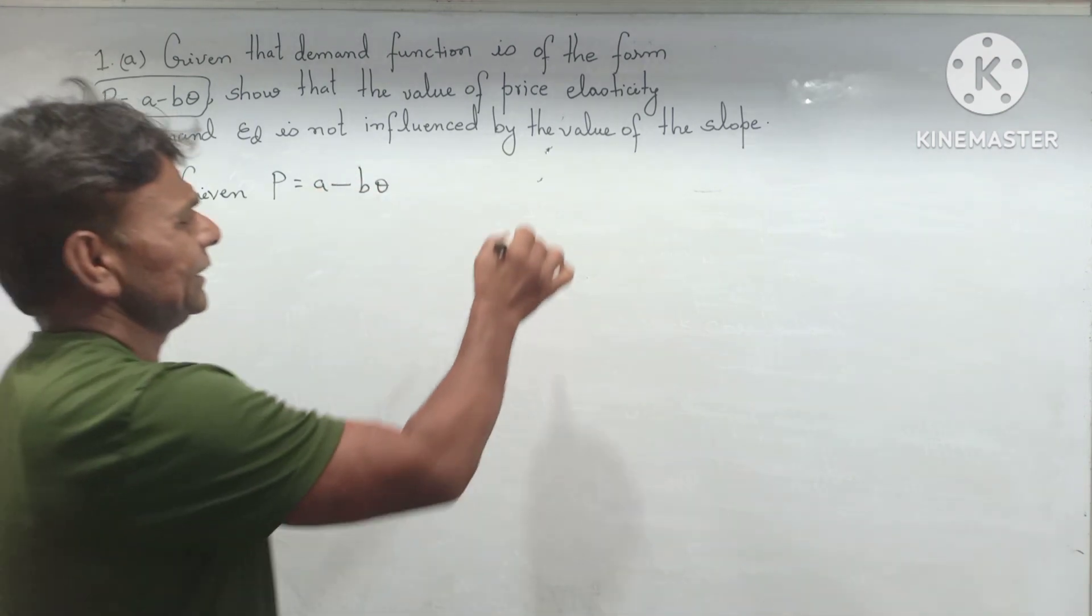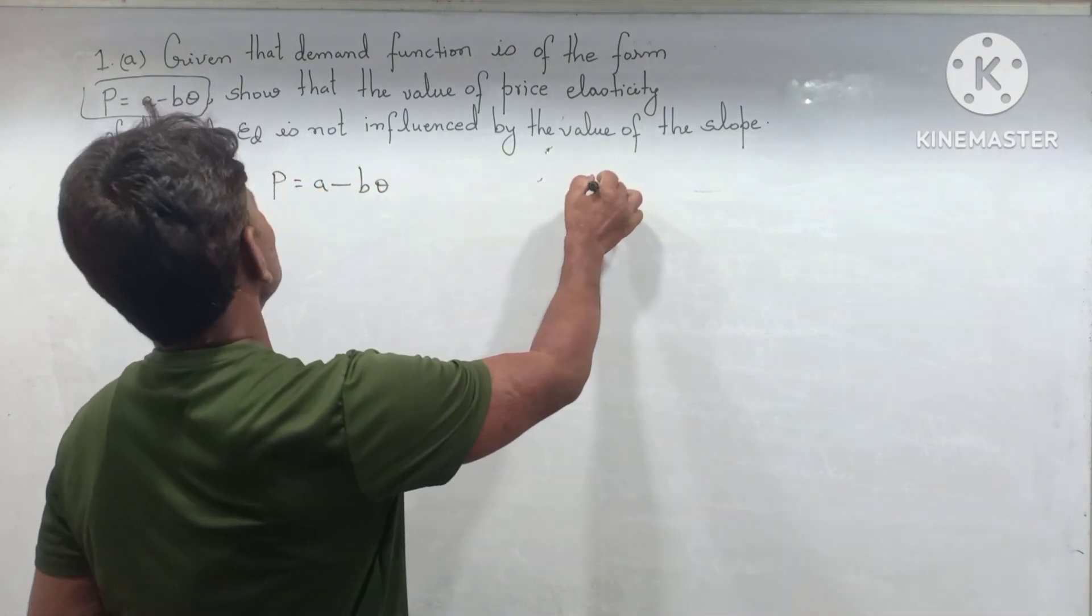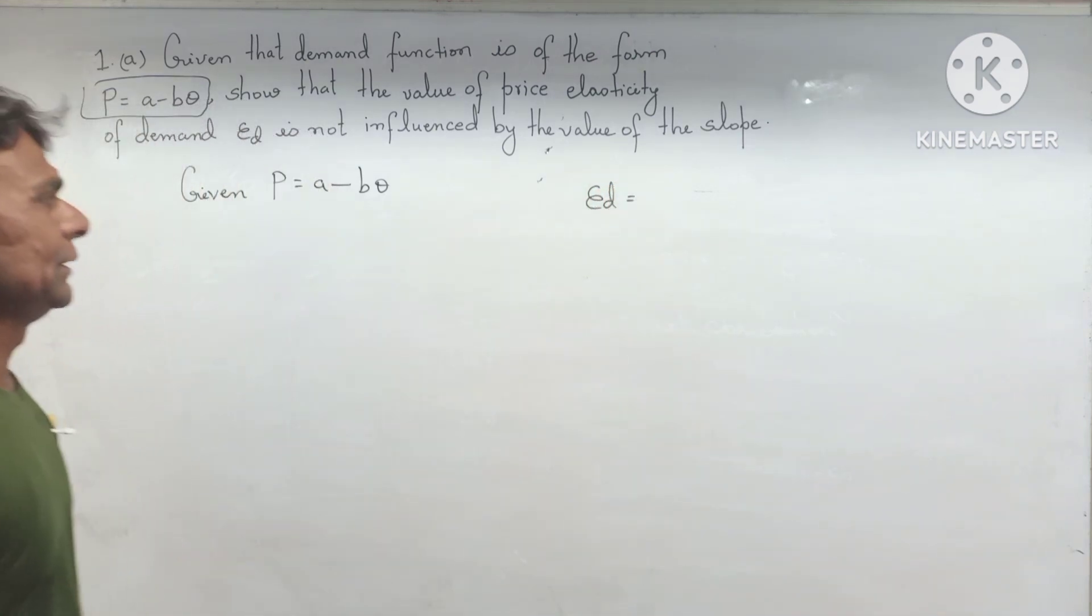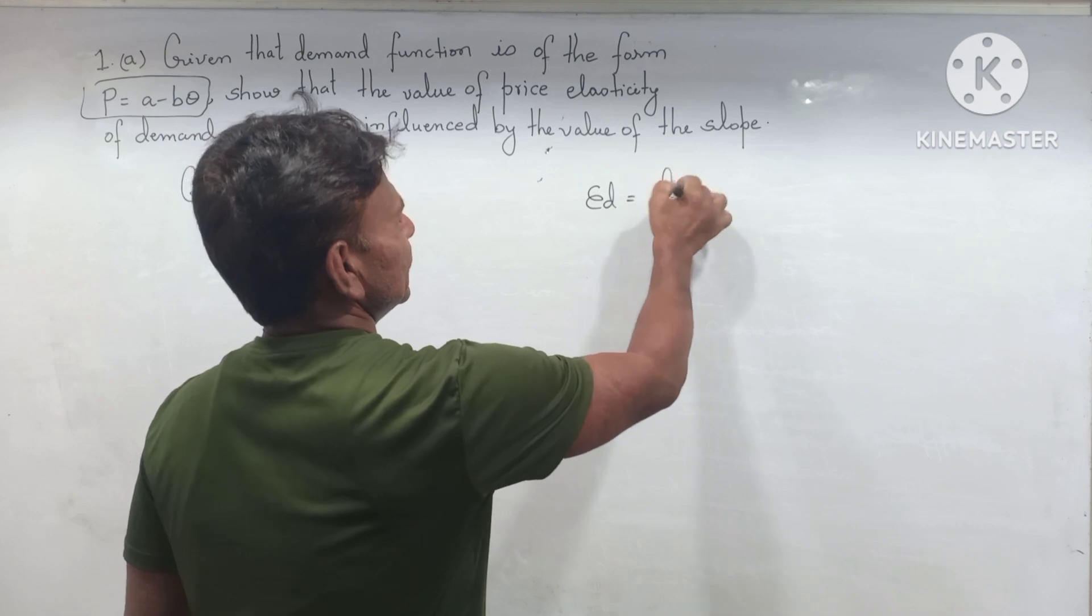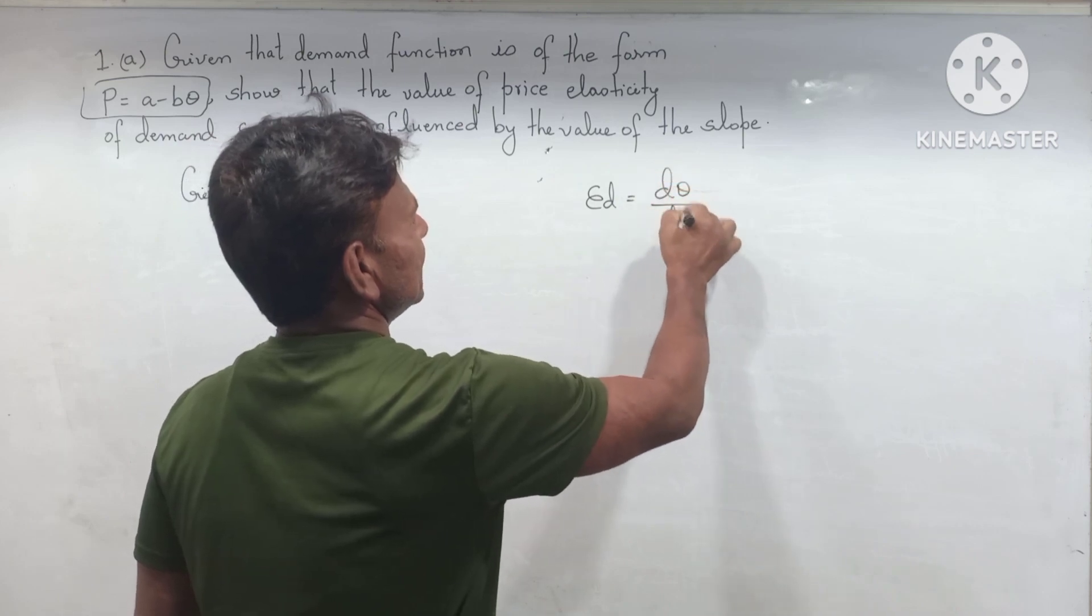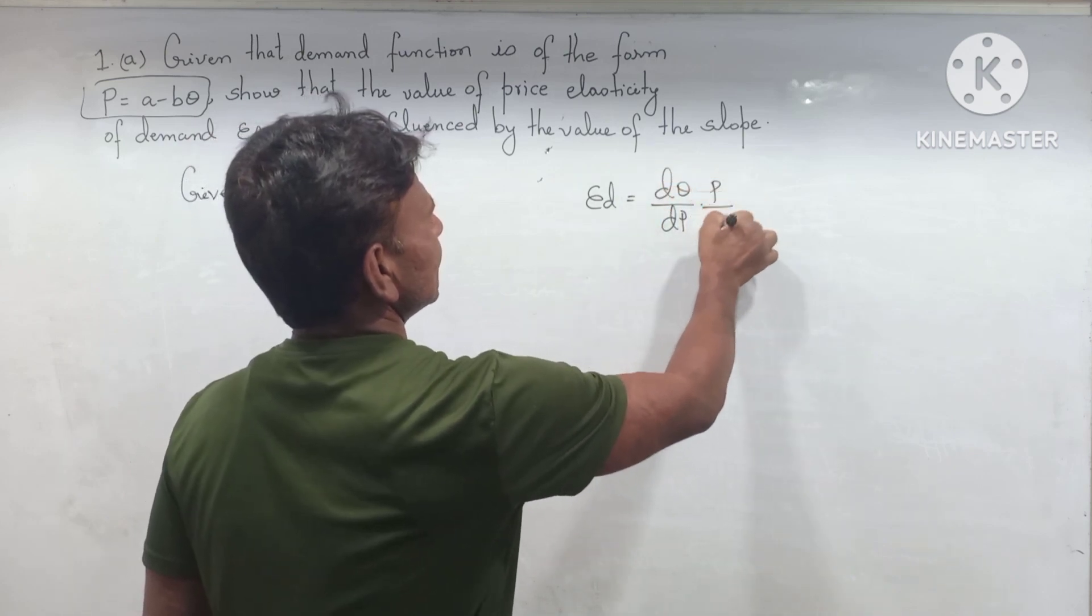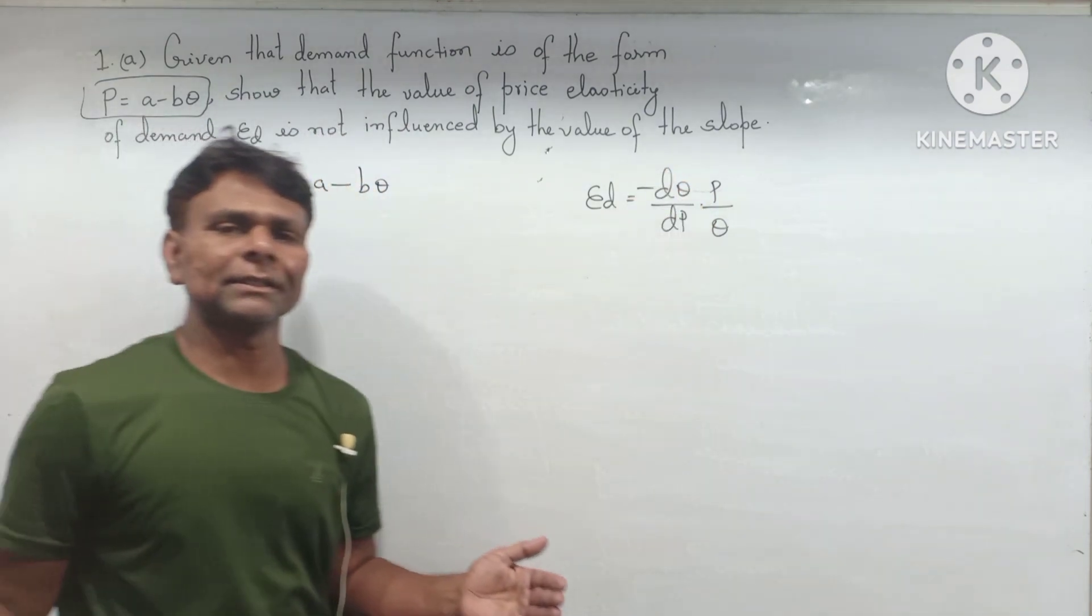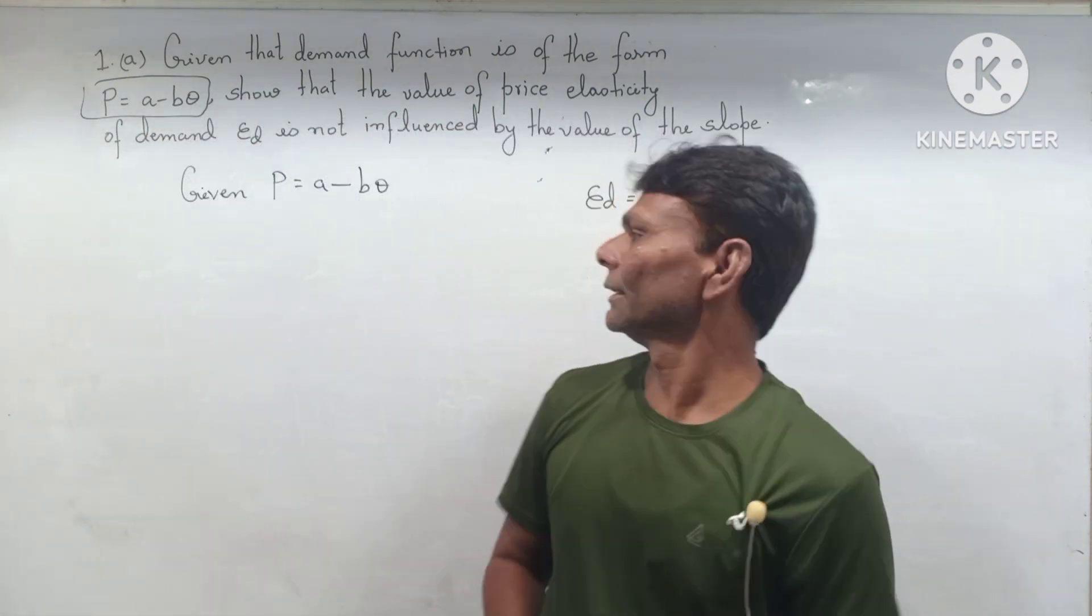And we know that the formula for elasticity of demand equals DQ/DP times P/Q. The negative sign shows the inverse relationship between quantity demanded and price.